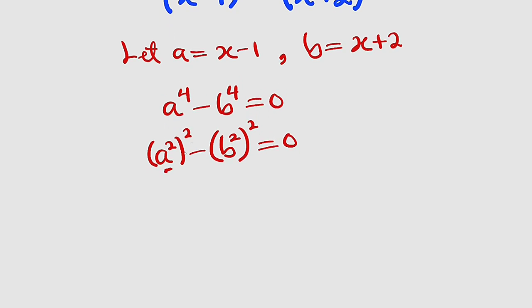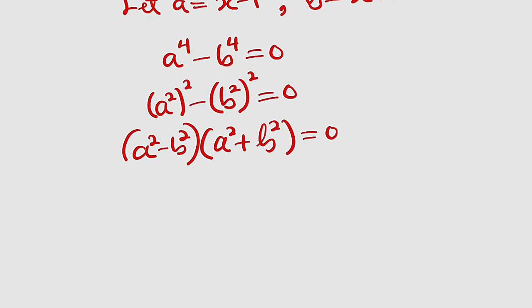Now we have difference of two squares. You take the first one without this power, minus the second one without the external power. So this is a squared minus b squared, multiplied by a squared plus b squared. This is equal to 0. This is difference of two squares again.